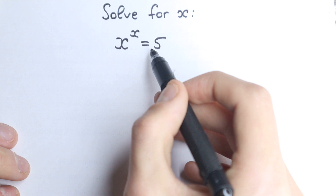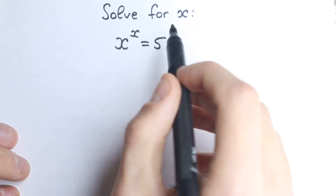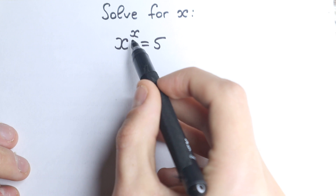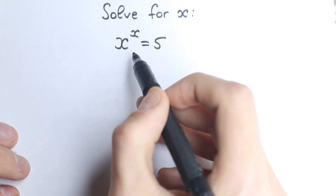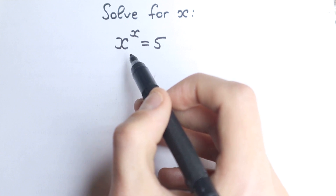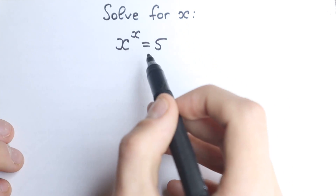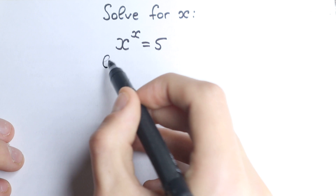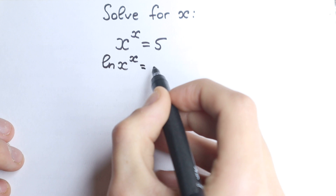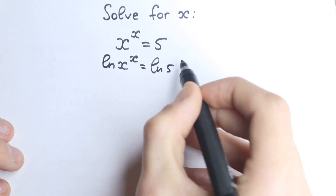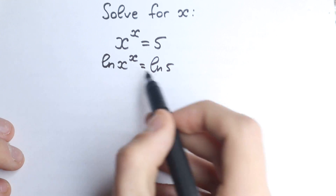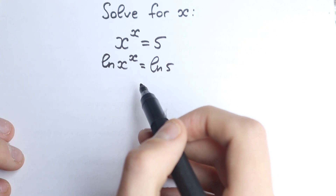So we have x to the power x equal to 5. We have a constant on the right hand side, so let's leave it there, but let's look at the left hand side — we have a power. From school it's really great to know about the natural log, so I apply natural log on both sides. We have natural log of x to the power x equal to natural log of 5. We just changed nothing because we applied it on both sides — left and right.